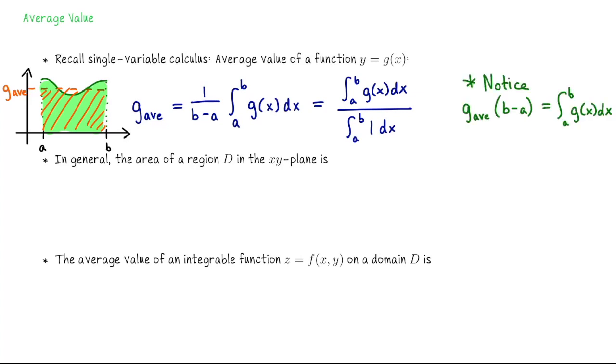Why is this the average value? If you take that b minus a and multiply it over to the left, we can say that the average value of g times the width of the interval is the integral of g from a to b. That average value is like an average height, and b minus a is the width of the interval. So the average value is the height so that if I were to draw a rectangle of that height over the same domain from a to b, this rectangular area would be equivalent to the area enclosed under the graph of g.